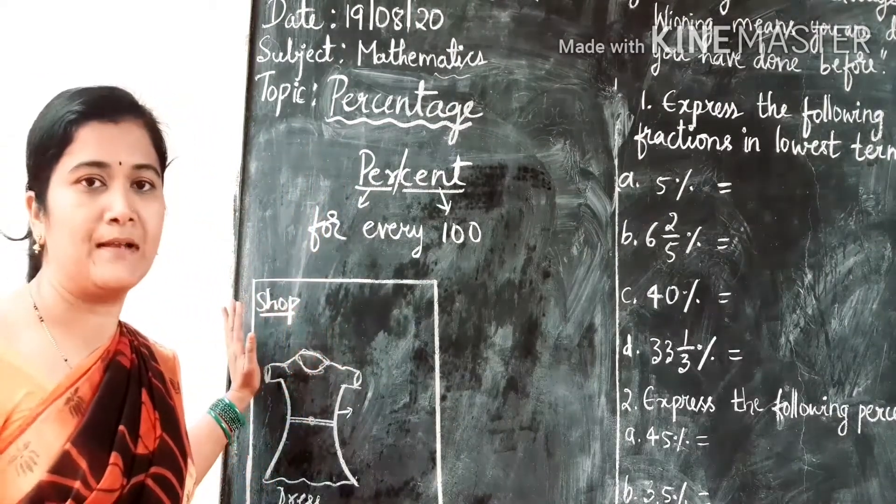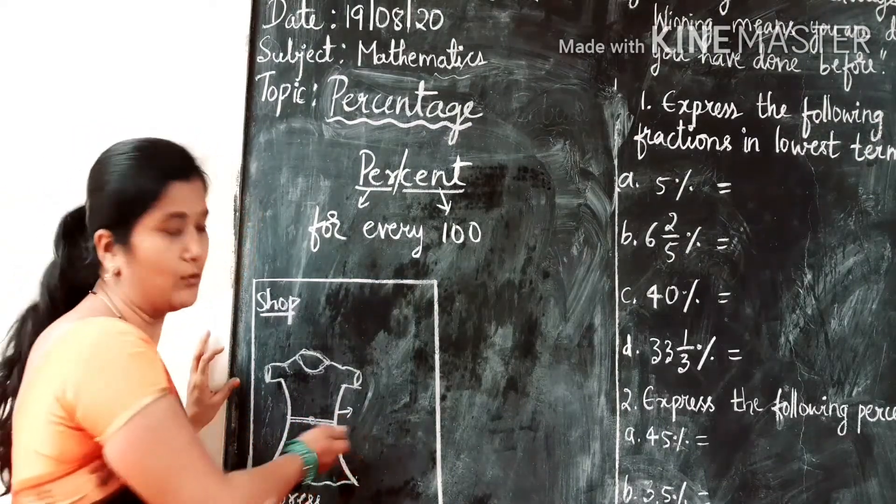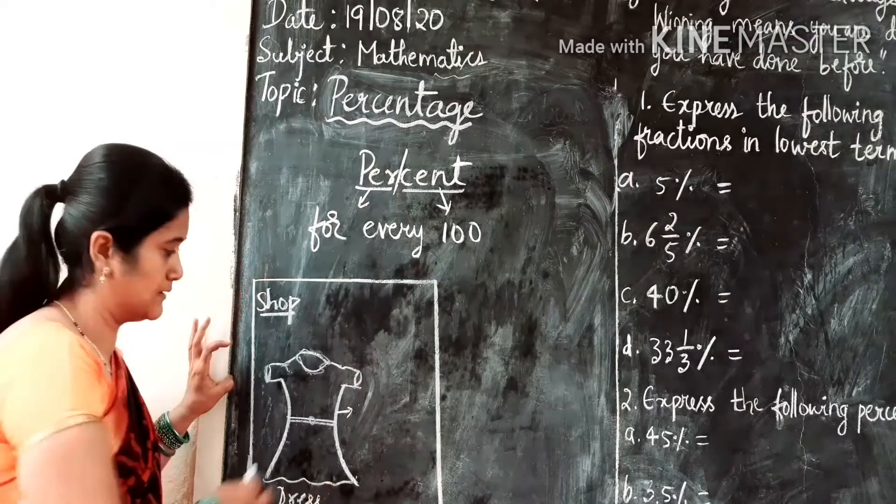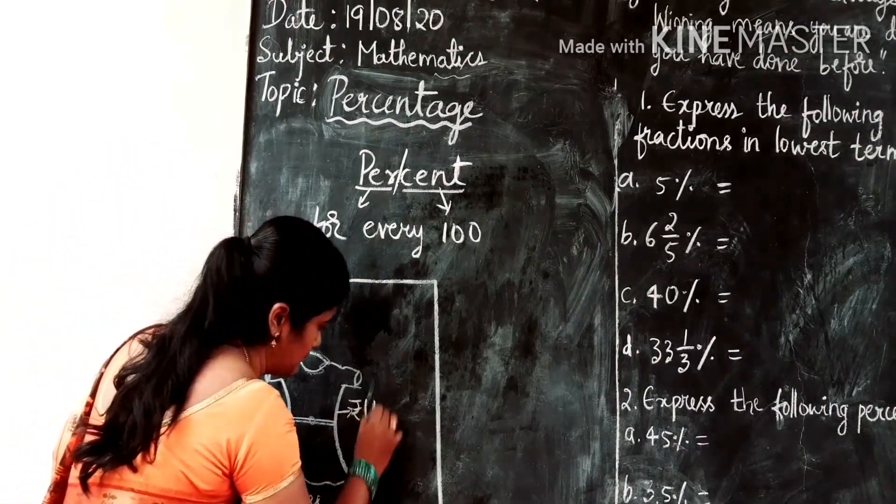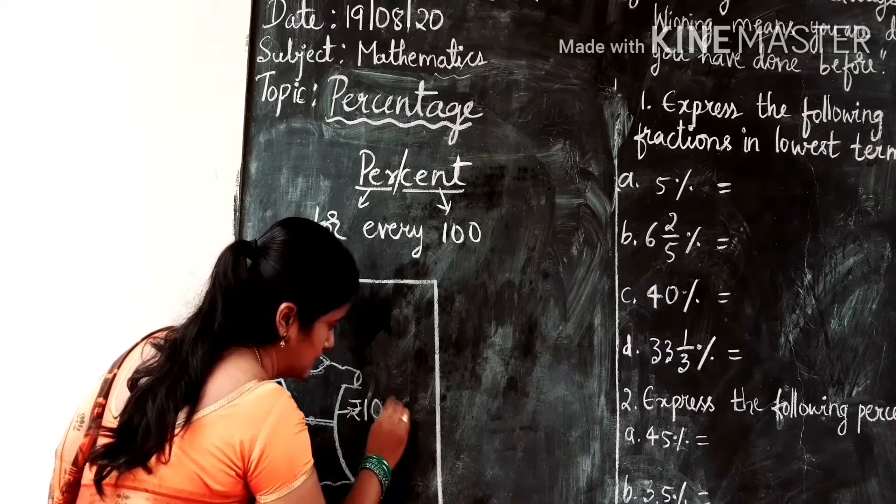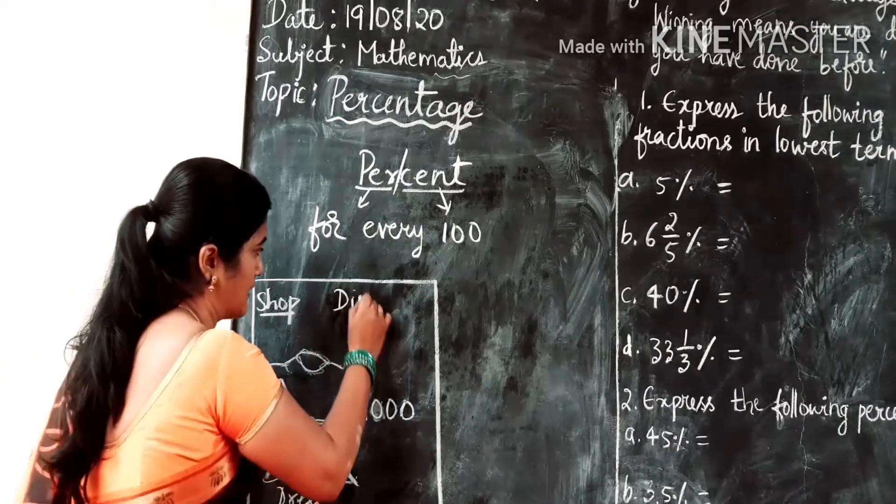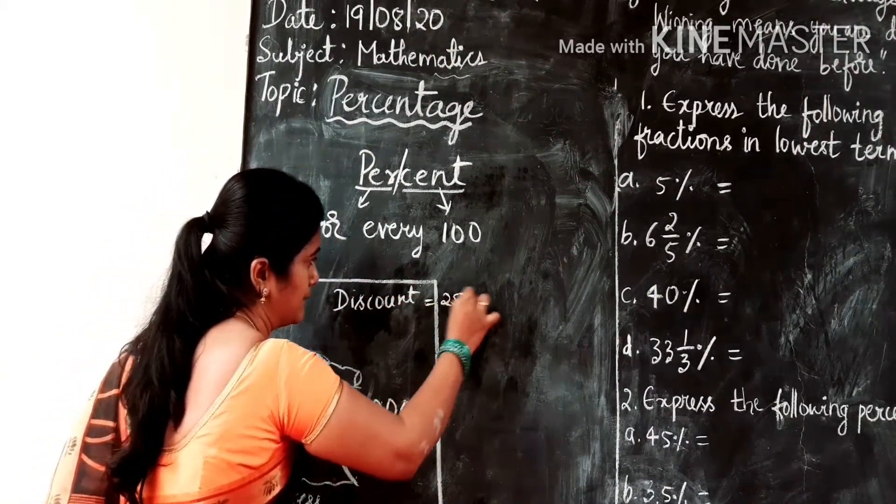Let me give you some example here. Let us think that you have gone to a shop and you want to buy this dress. Now the price of this dress is 1000 rupees. So this shop is given a discount of 25 percent.